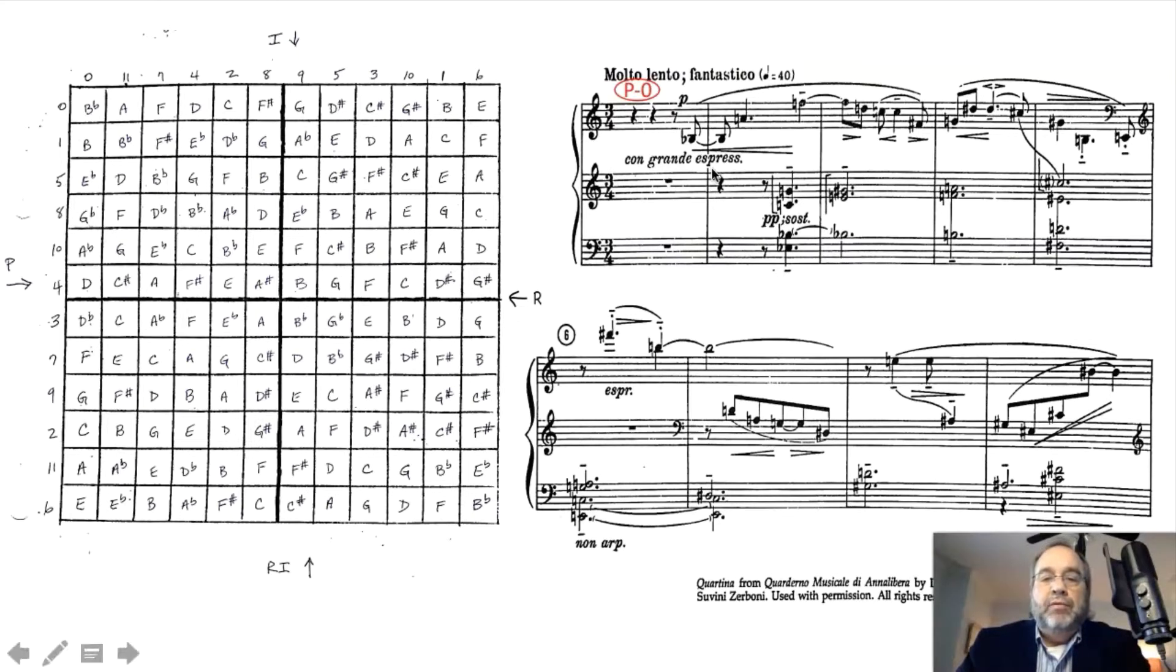So B-flat is note number one, A is note number two, and F is three, D is four, C is five, F-sharp is six, G is seven, D-sharp is eight, then there's a repeated D-sharp, but that's okay. C-sharp is nine, G-sharp is ten, B is eleven, and that's a little E, which is twelve. Okay, so that takes care of all of the notes on the top staff.